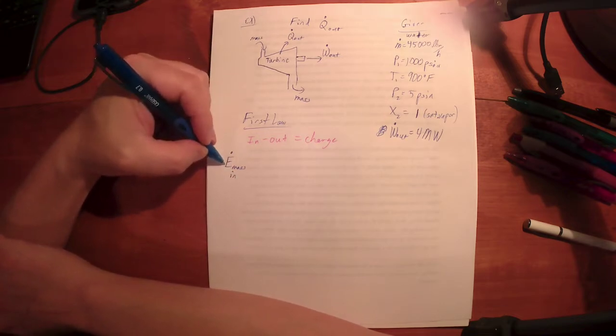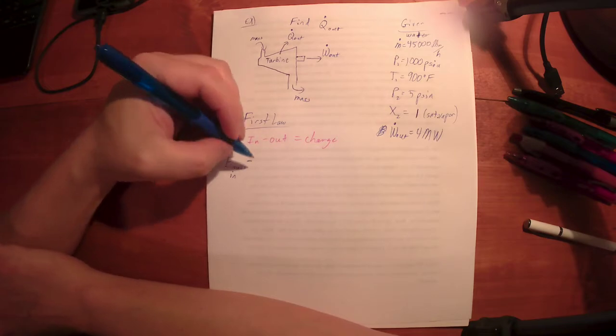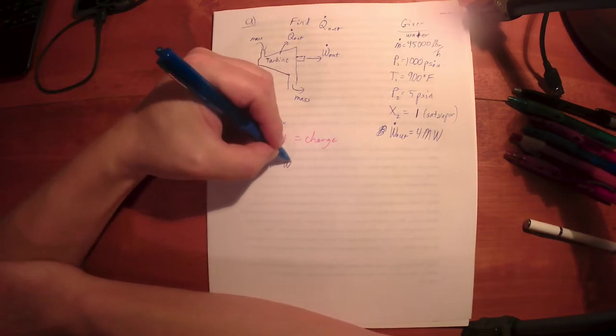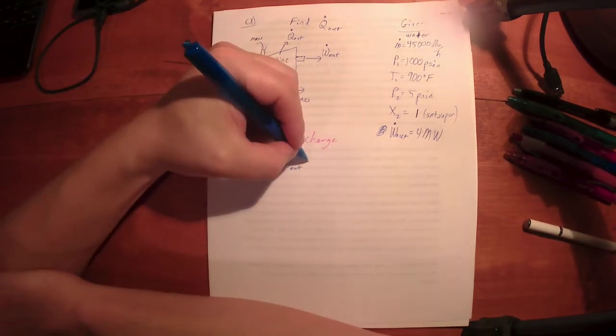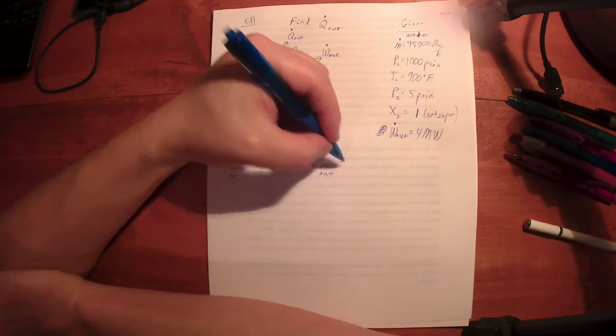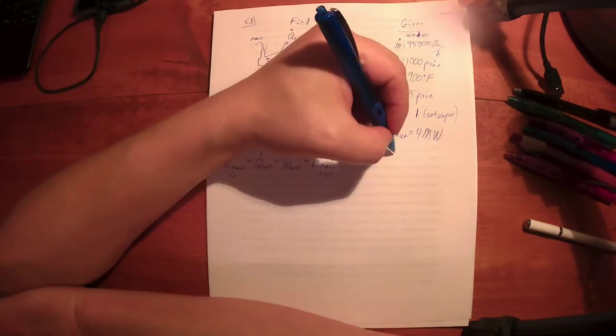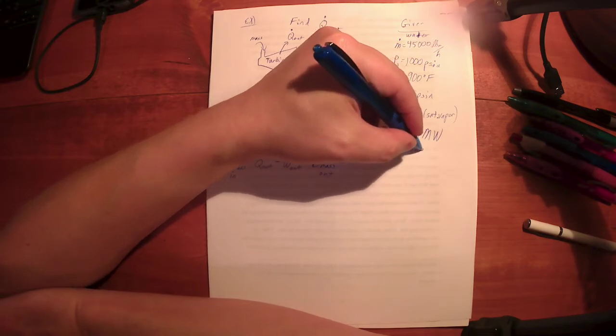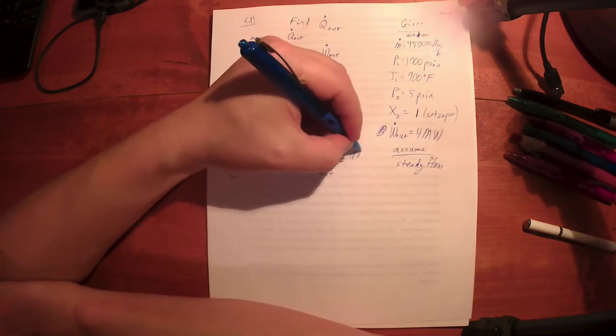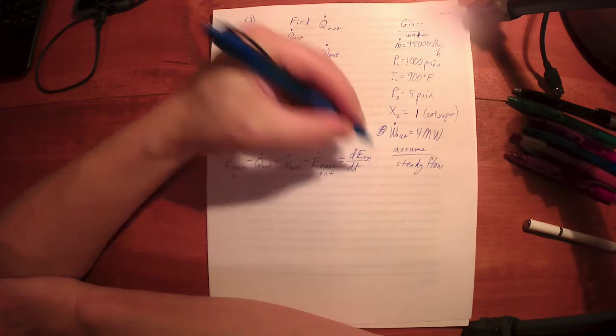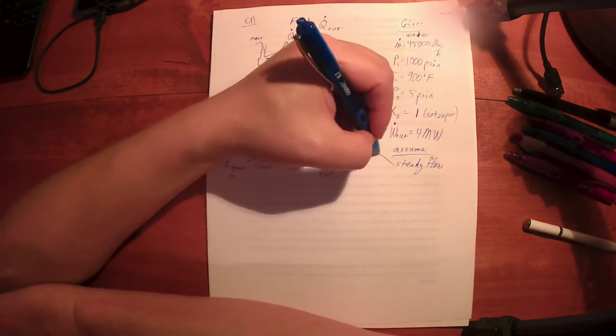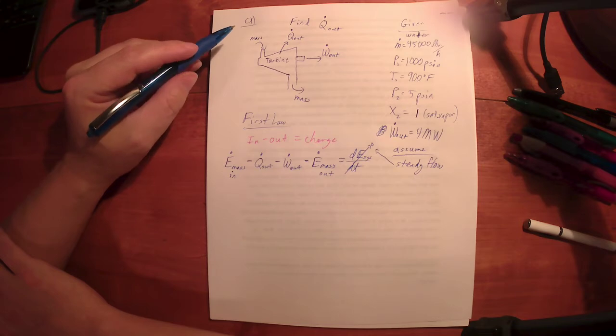Every first law equation looks like that. Add the in, subtract the out. So what do I have coming in? Well, I've got energy of the mass coming in, the rate of energy of mass coming in, that's E dot mass in. Going out, I've got three things going out. So they're all going to get subtracted. I've got the rate at which heat is being lost, Q dot out, minus the power output, which is given, minus the rate at which energy is going out through the mass. So E dot mass out. That's equal to the change. What do we know about the change? Well, I think it was given, but if it wasn't given, I think we're just going to assume that this is steady flow. What does that mean? Well, the change is D E system D T, the change in energy with respect to time for our system. If we're assuming steady flow, we're assuming that that changes zero.